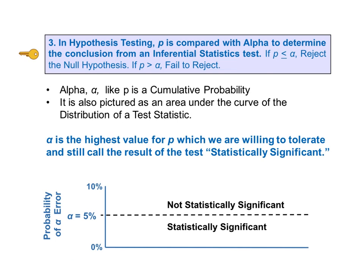Key to understanding number three says: in hypothesis testing, P is compared to alpha to determine the conclusion from an inferential statistics test. If P is less than or equal to alpha, then we reject the null hypothesis. If P is greater than alpha, then we fail to reject the null hypothesis. But what is alpha? Alpha is called the level of significance or the significance level. It is the highest value for P which we are willing to tolerate and still call the result of the test statistically significant.